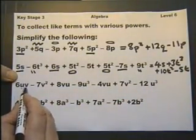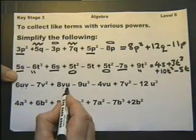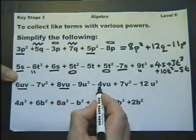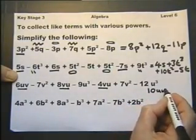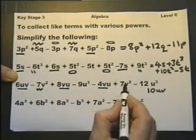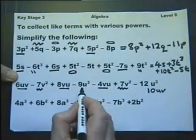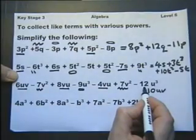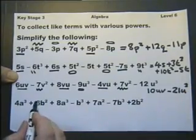It doesn't matter which way around the letters go. Uv is the same as vu. So that's 6, 14, take away 4, so that's 10uv. Minus 7v squared, plus 7v squared—they cancel each other out. Minus 9u cubed, minus 12u cubed, minus 21u cubed.